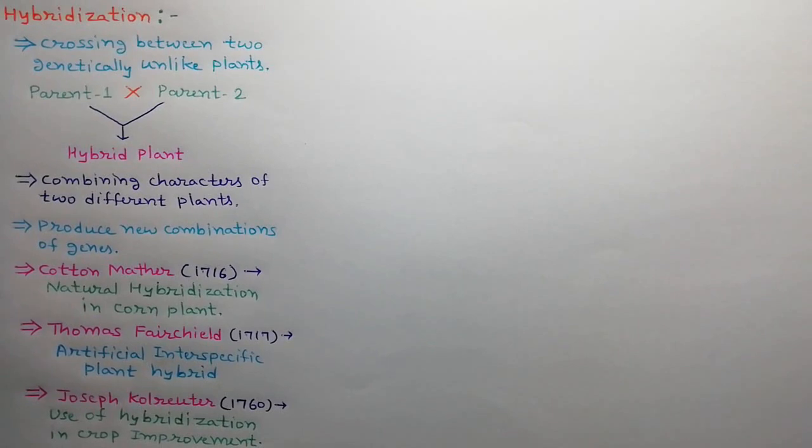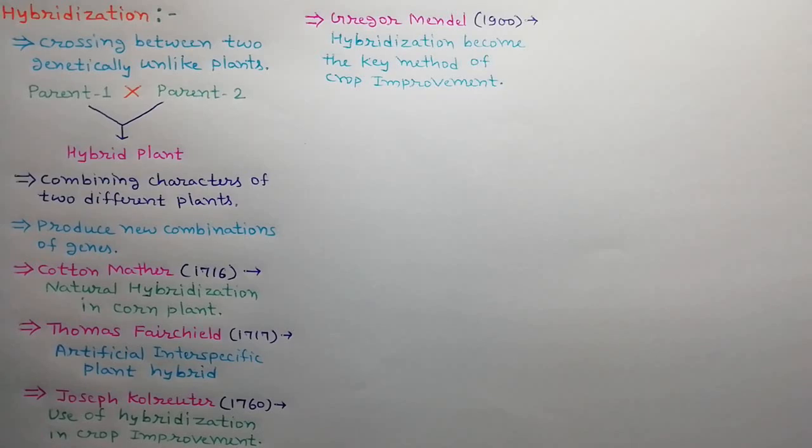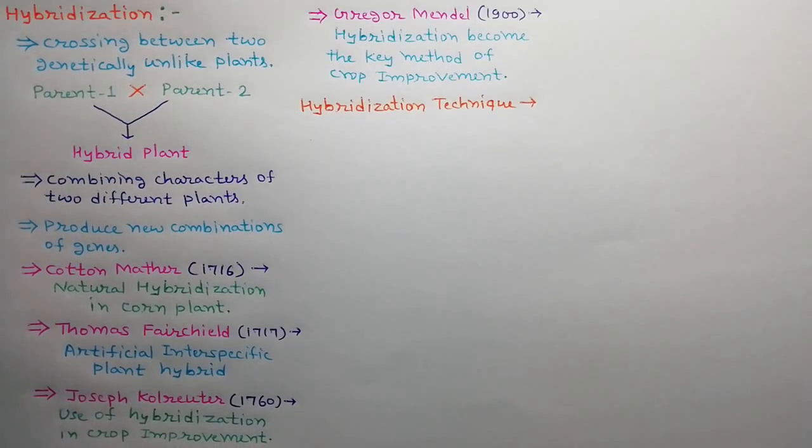Hybridization was first practically utilized in crop improvement by German botanist Joseph Koller Uter in 1760. After Mendel, hybridization had become the key method of crop improvement.